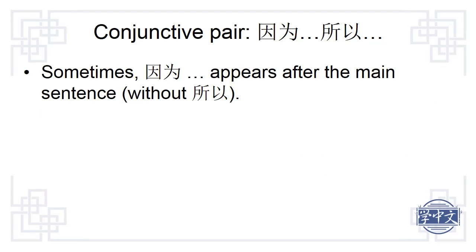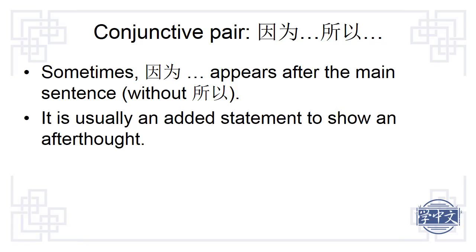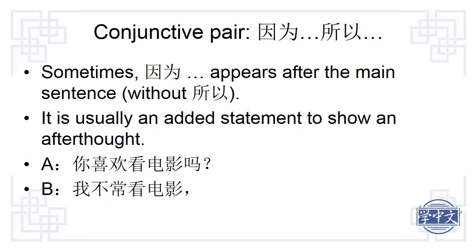In real life communications, it is possible to have 因为 after the main sentence, usually as an added statement to show an afterthought. For example: 你喜欢看电影吗? (Do you like to see movies?) Instead of a direct yes or no, Person B replies 我不常看电影 (I don't often see movies). This reply could be considered complete, but Person B adds 因为我很忙 to give the reason. To use 因为 this way is quite common in real life communications.